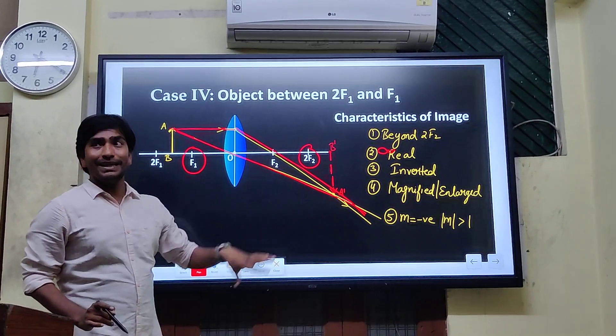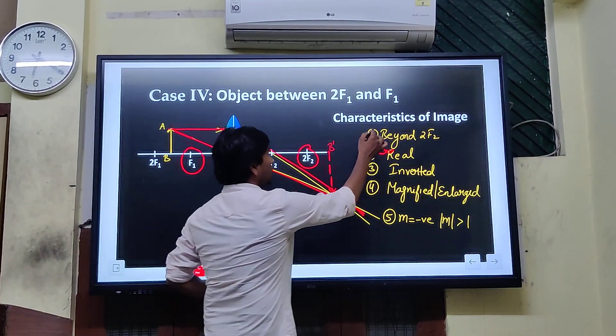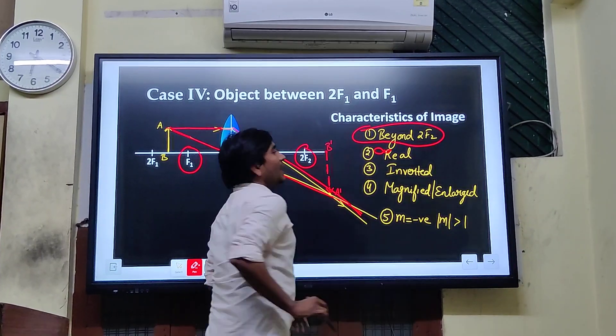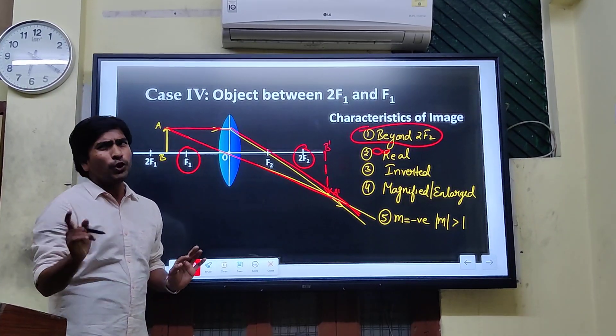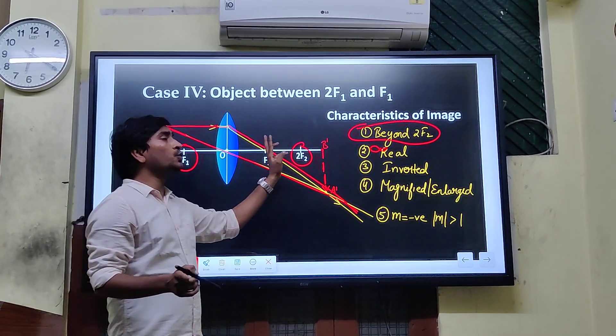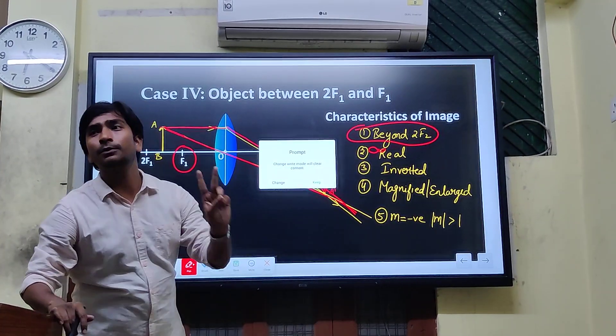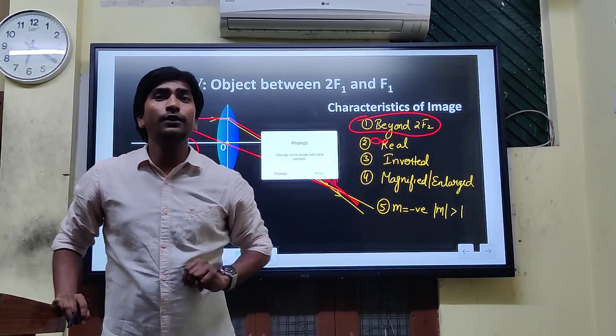But in this case, what will happen? Beyond 2F2. What is the normal angle? 2F2 and infinity.